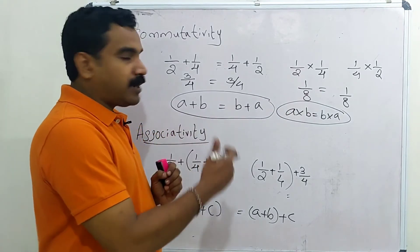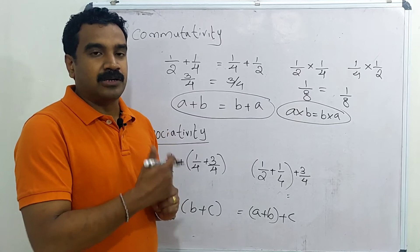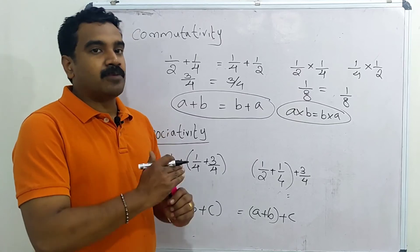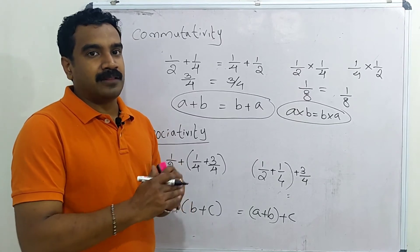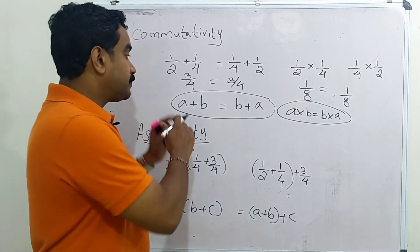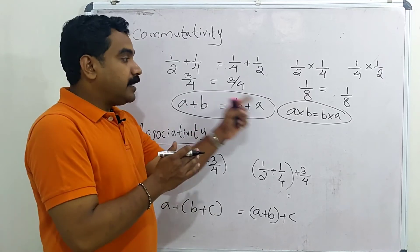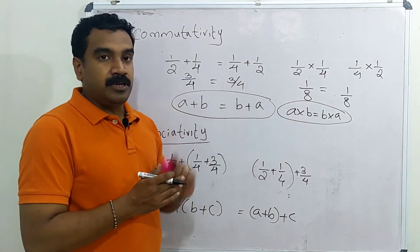However, commutativity does not hold for subtraction. For example, 1 by 2 minus 1 by 4 gives 1 by 4, but 1 by 4 minus 1 by 2 gives negative 1 by 4. So A plus B equals B plus A and A into B equals B into A, but subtraction is not commutative.